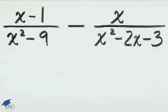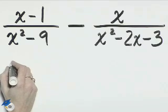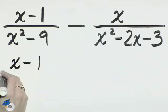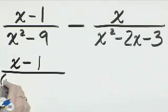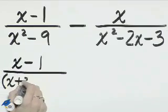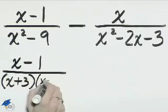To determine the least common denominator for these two fractions, let's first factor those denominators. This will be x minus 1 in the numerator, and the denominator is the difference of squares, x plus 3, x minus 3.